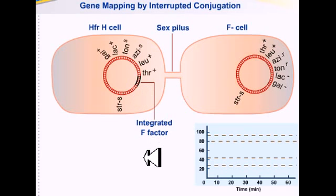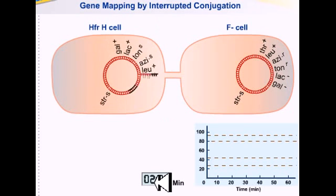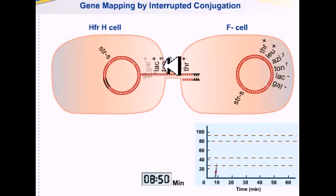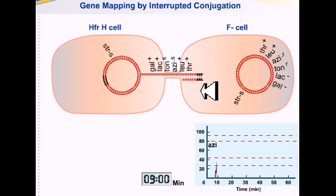In the classic experiment by Wollman and Jacob, the cells were put together at time 0. At various time intervals, the sex pili were pulled apart and the specific genes that had been transferred prior to the interruption were recorded. Starting from 0, at different time intervals we split off the conjugation bridge, separating the two cell types.